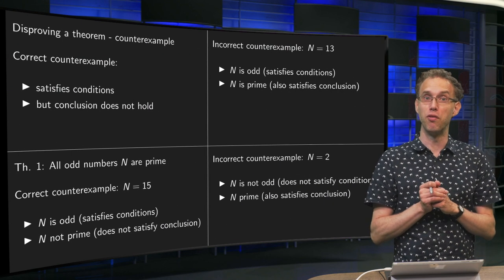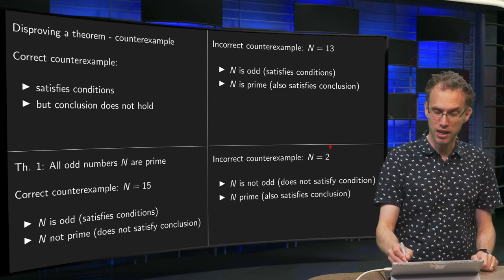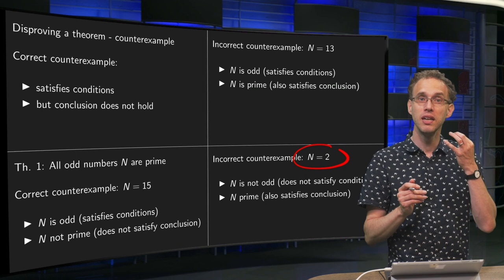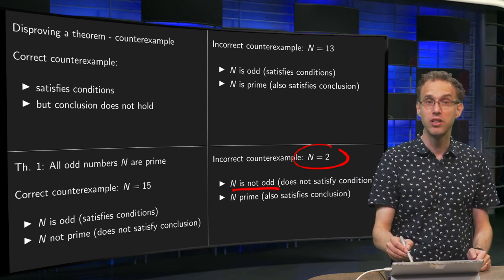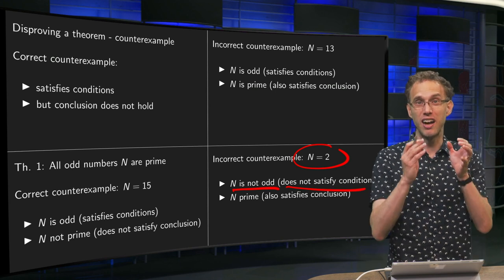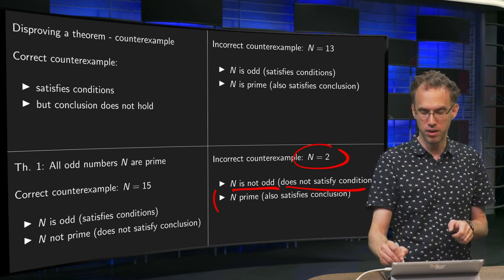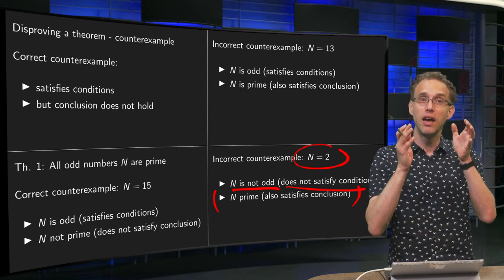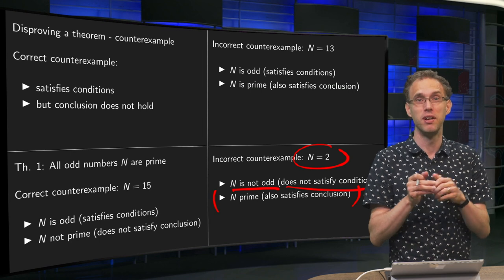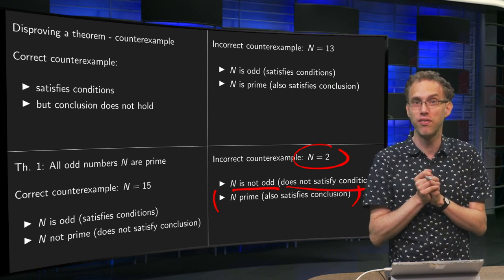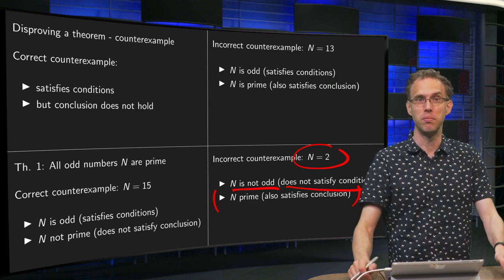Now let's look at an even worse attempt at a counterexample: n equals 2. This is even worse, because n is not odd, so this number does not satisfy the conditions of the theorem. You can already stop there — you don't even have to look at the second part. A correct counterexample must satisfy the conditions of the theorem, and this number doesn't, so it can never serve as a counterexample.